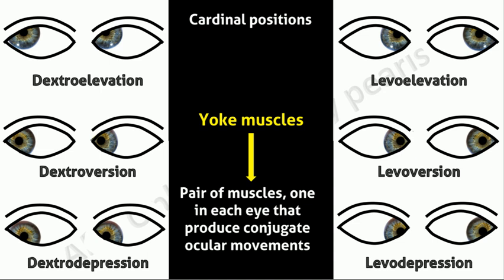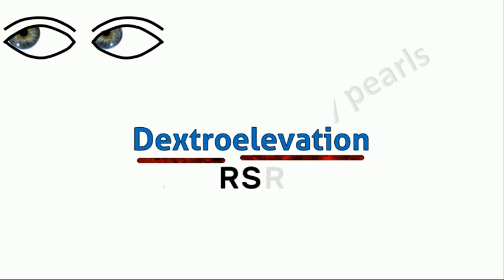Now you have understood the yoke muscles. I will teach you a shortcut to remember them in an emergency. We won't consider dextroversion and levoversion because that is straightforward. For the other positions, first always determine the yoke muscle that is the rectus. Since the vertical recti cause vertical movements in abduction, determine the yoke muscle for the eye in abduction. For dextro elevation: dextro is right, elevation is by superior rectus. So the prime mover of the right eye is the right superior rectus. To obtain its yoke muscle, simply take the opposite of every component: instead of right put left, instead of superior put inferior, instead of rectus put oblique. So the right superior rectus and the left inferior oblique are the yoke muscles for dextro elevation.